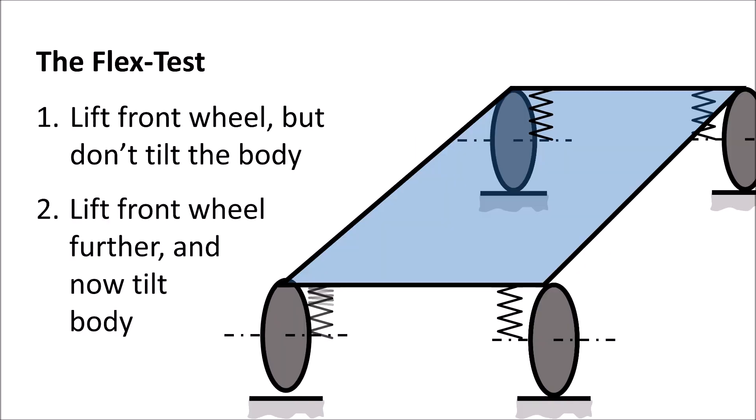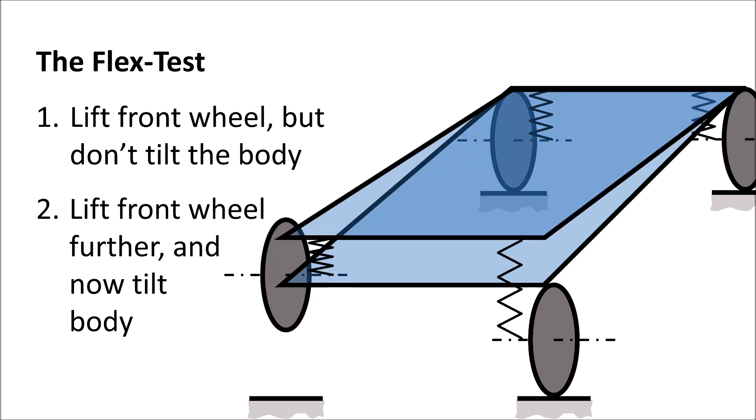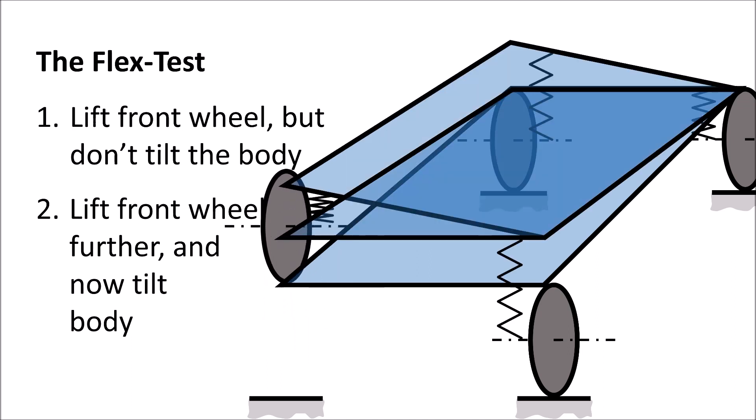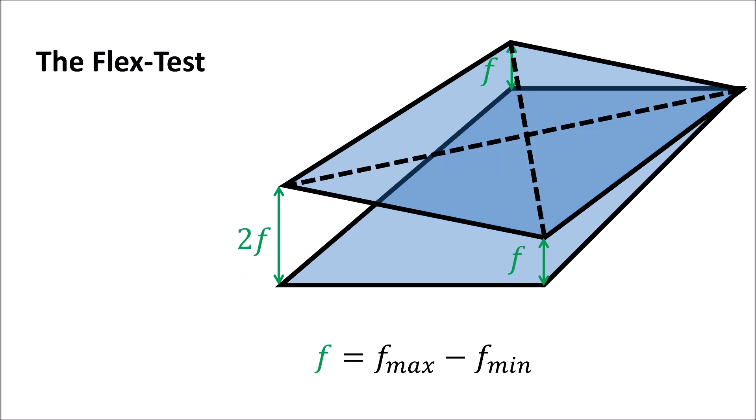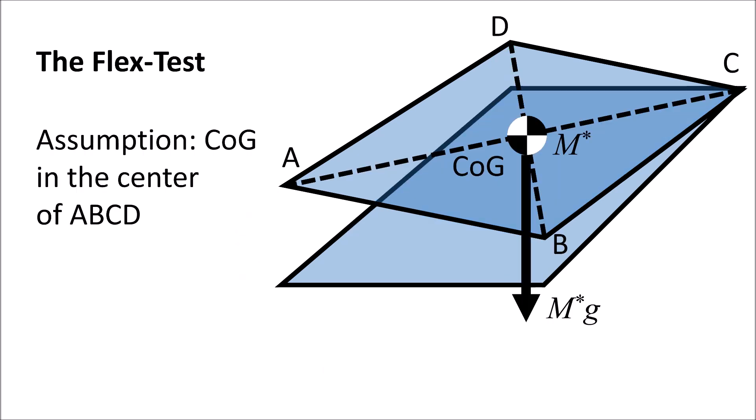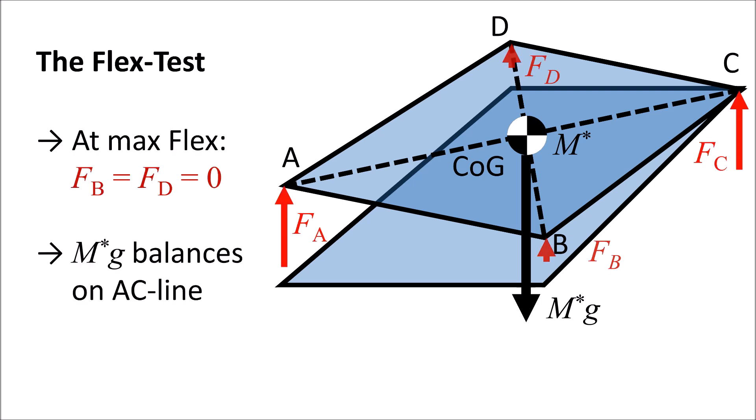And then tilt the front wheel further, but now tilt the body. If we now assume that the center of gravity lies in the middle of the rectangular area ABCD, we see that the wheels at B and D lose ground contact.